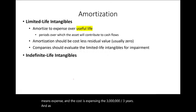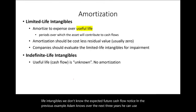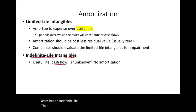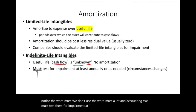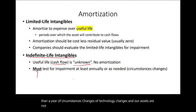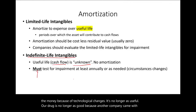For unlimited-life intangibles, the expected future cash flow period is unknown, so we do not amortize them. Instead, we must test them for impairment at least annually, or as needed — sometimes less than a year if circumstances change. If technology changes and the asset is not performing as expected, or a patent is no longer as useful due to technological changes, or a drug is no longer as effective because another company came out with a better drug, then we have to test for impairment.